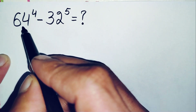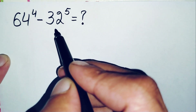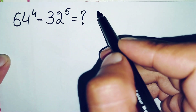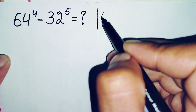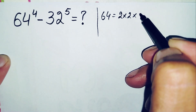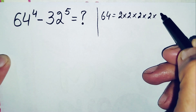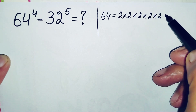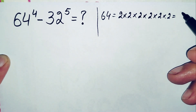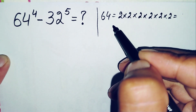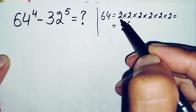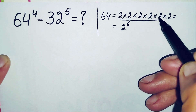First of all, we will try to change these two bases, 64 and 32, to their exponential form having 2 as the base. We can write 64 as 2 multiplied 6 times: 2×2=4, 4×2=8, 8×2=16, 16×2=32, and 32×2=64. So 2 is multiplied 6 times, meaning 64 equals 2 raised to power 6.